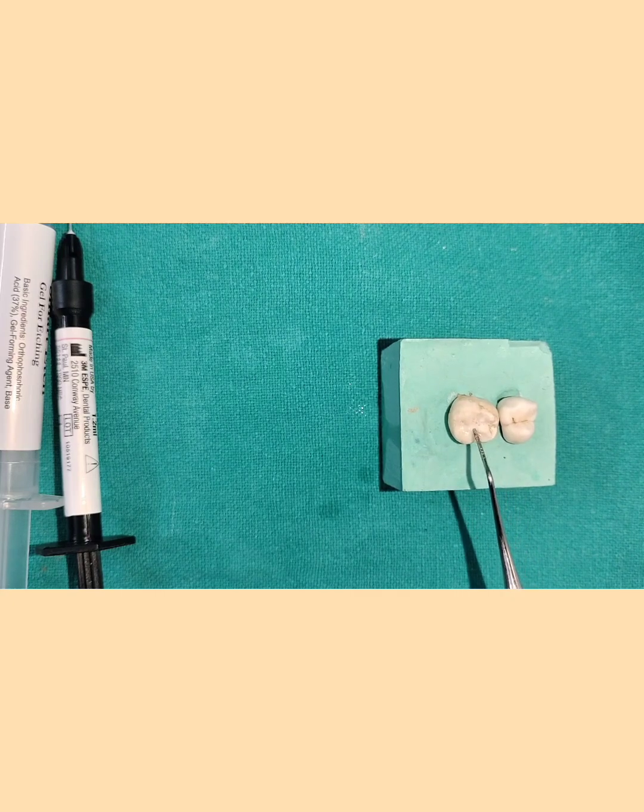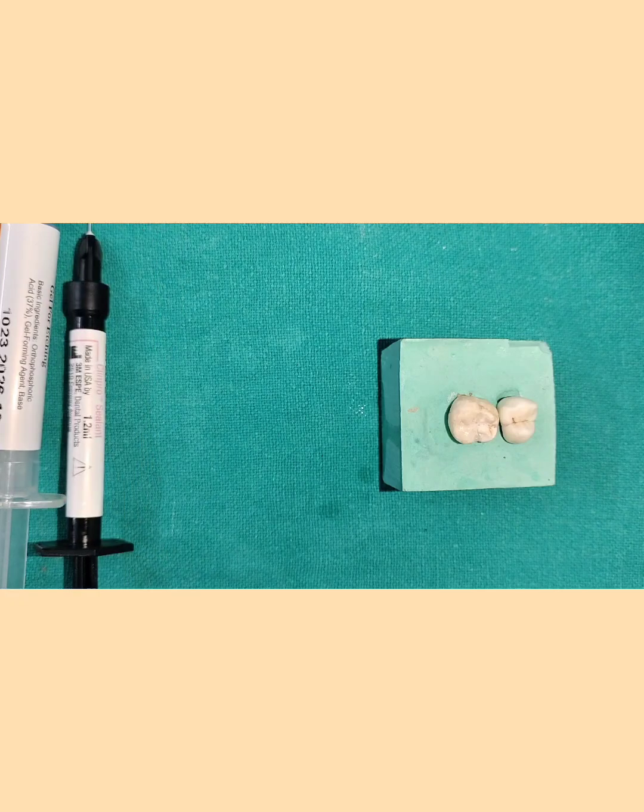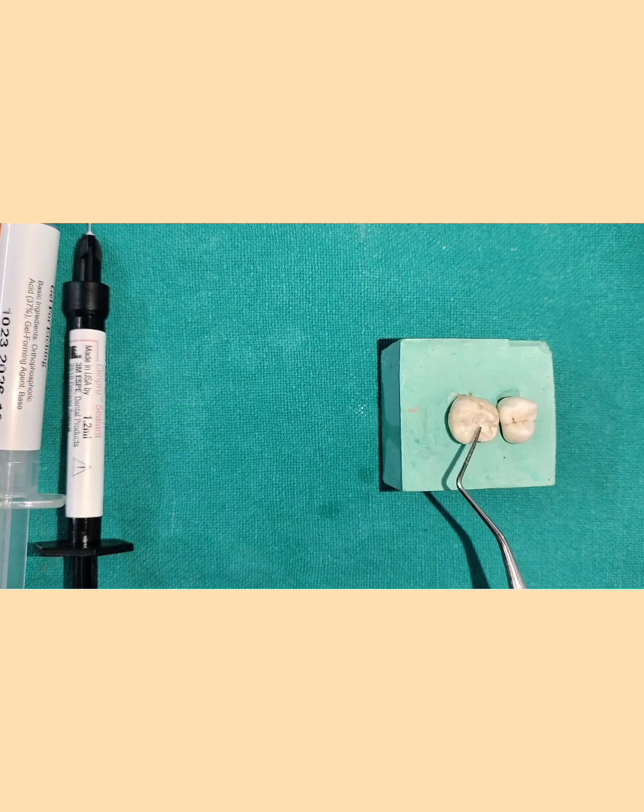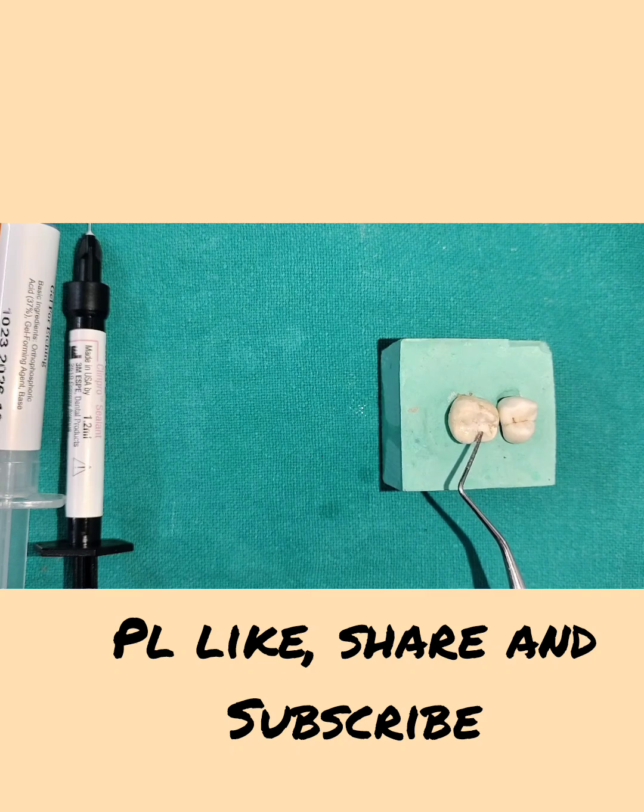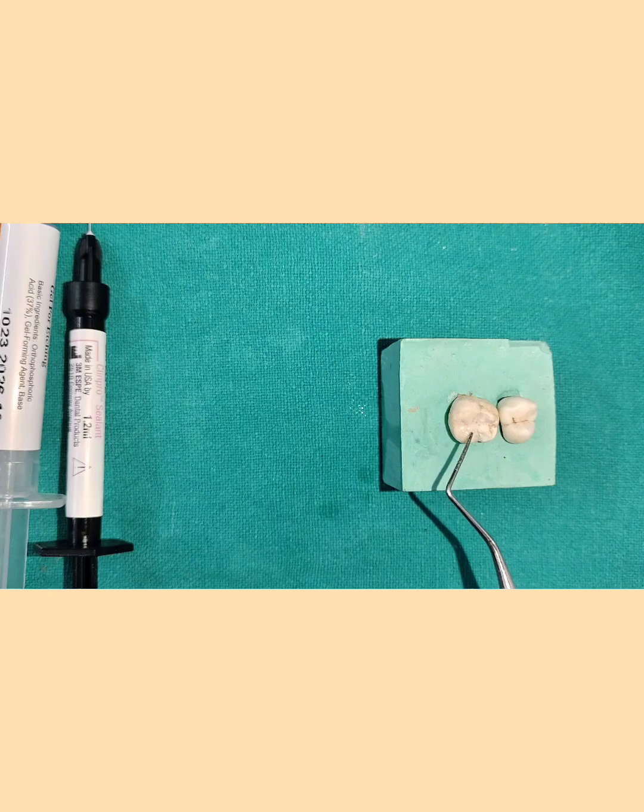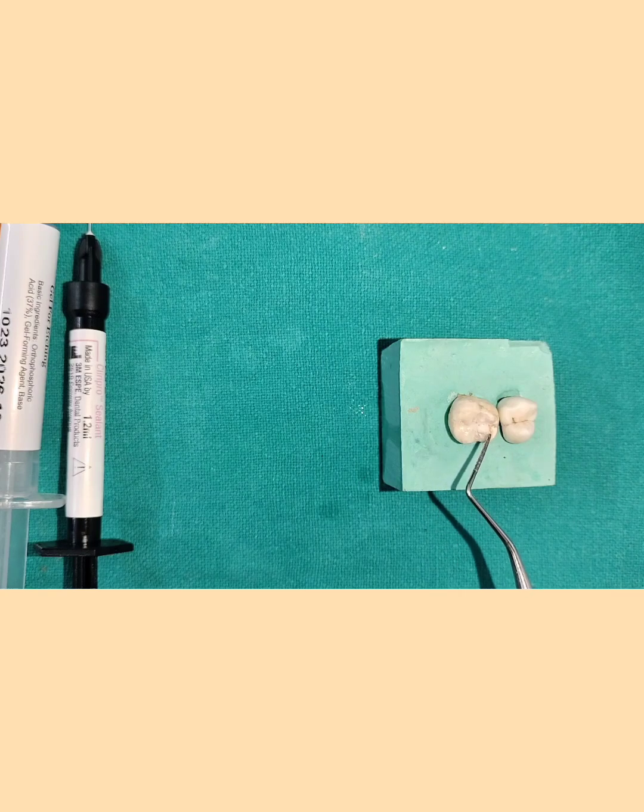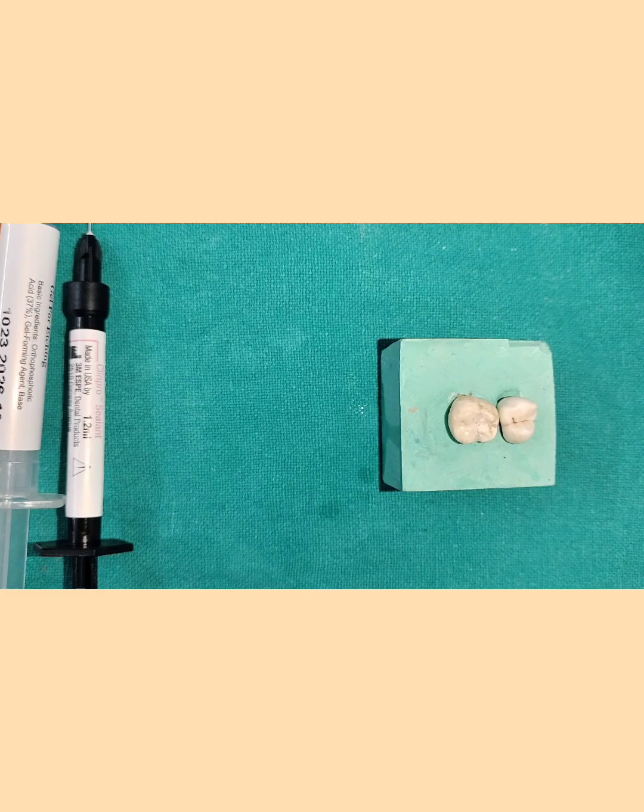Now after this what you have to do is you have to check the occlusion. Occlusion can be checked with the help of articulating paper. And accordingly you will be finishing and then protecting the restoration. It can be protected by using petrolatum jelly or you can even apply a bonding agent and cure it. So once this is done the procedure gets over.